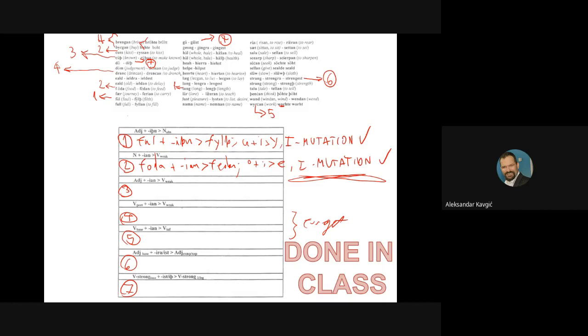We will only focus on changes which you can see even today, where you sense something is weird — things like 'foul' and 'filth', 'food' and 'feed', irregular comparison of adjectives such as 'old', 'elder', 'eldest'. That's actually i-mutation. I-mutation also occurred in contexts where inflectional suffixes were lost over time. The most famous example is 'moose'-'mice'. Mice today is the consequence of i-mutation. Also 'foot' and 'feet', 'mouse'-'mice', 'louse'-'lice' — these are all i-mutation changes.